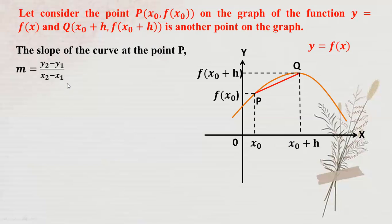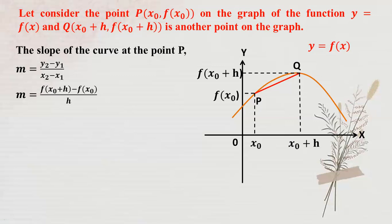We can use slope equals (y₂ - y₁) divided by (x₂ - x₁). Then where Y₂ is the y-coordinate of Q and Y₁ is the y-coordinate of P, so y₂ minus y₁ equals f(x₀ + h) minus f(x₀), and x₂ minus x₁ equals h.